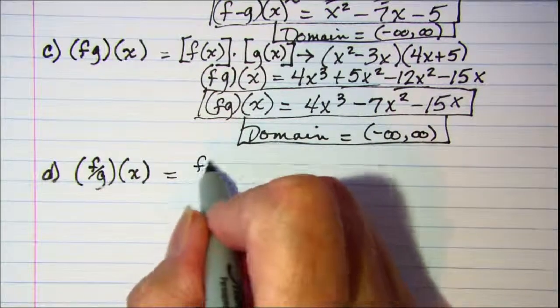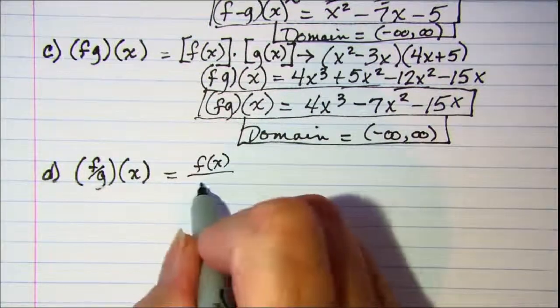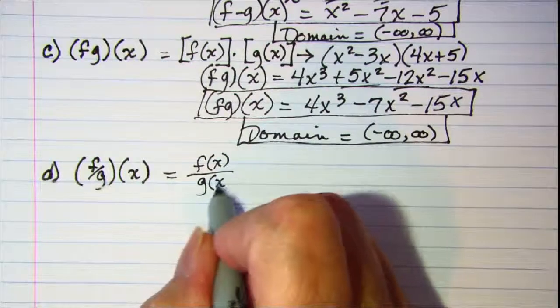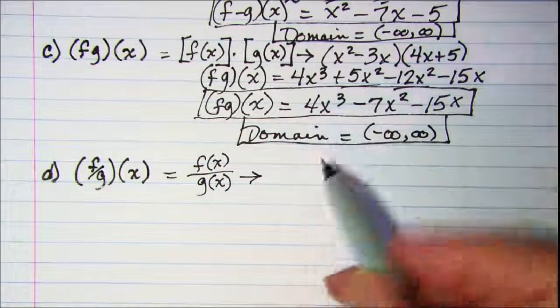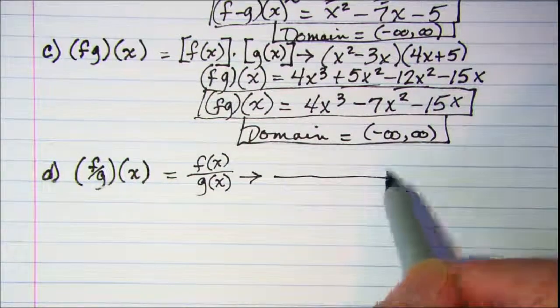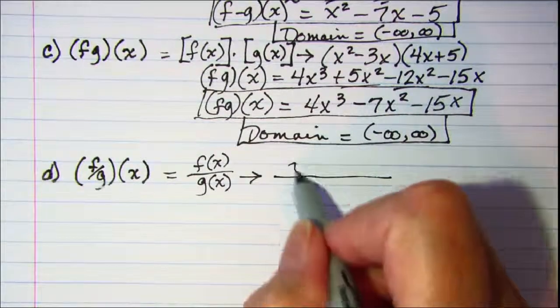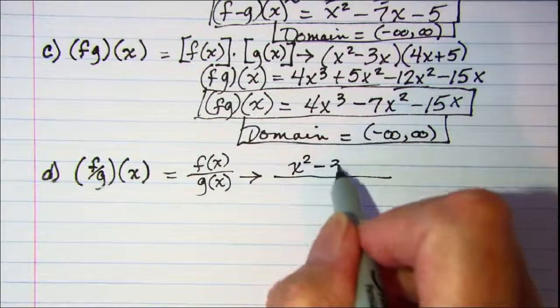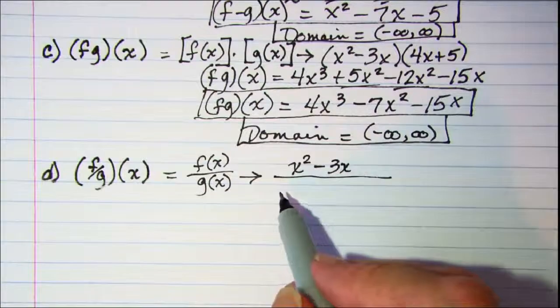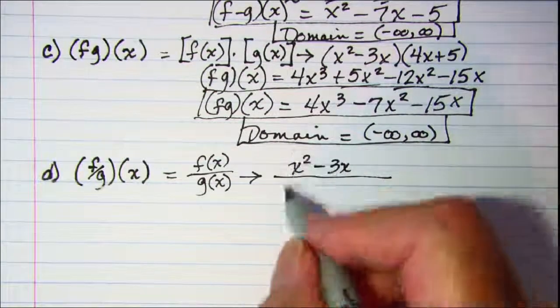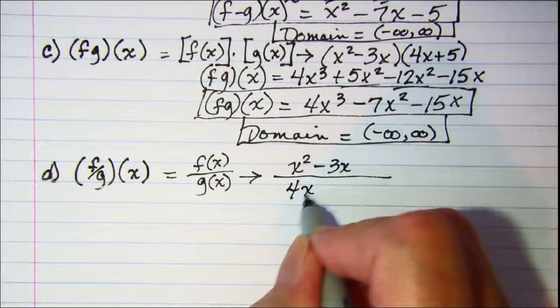This is f of x divided by g of x which will be f of x in the numerator, x squared minus 3x, and g of x is in the denominator. So 4x plus 5.